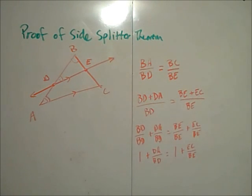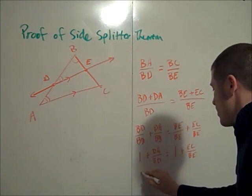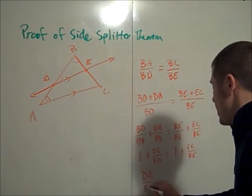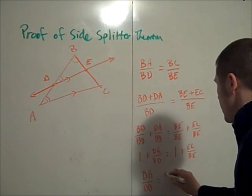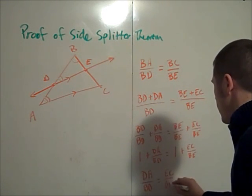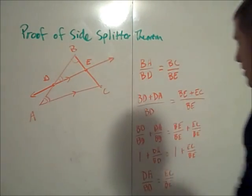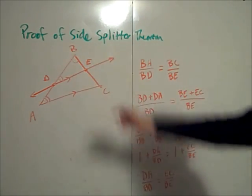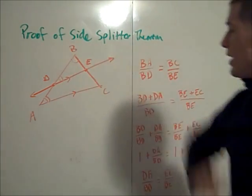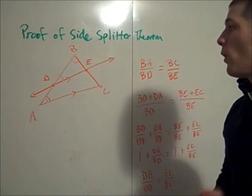Now subtract 1 from both sides of this equation and we get our desired result. Namely DA over BD is equal to EC over BE which is exactly what we wanted to show.